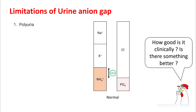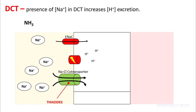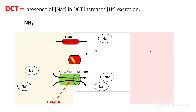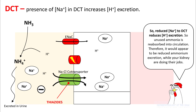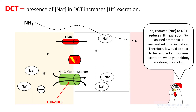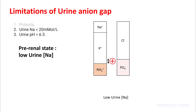There are a few limitations of the urine anion gap. First, polyuria — if you produce a lot of diluted urine, your urine anion gap will falsely appear higher, suggesting a renal etiology when it is not. Another concept: the presence of sodium in the distal convoluted tubule increases hydrogen excretion. As you absorb sodium in the DCT, you generate negative intraluminal charges, allowing hydrogen ions to be excreted and combine with ammonia to form ammonium, which is then excreted. If there is not enough sodium in the DCT, hydrogen excretion is reduced, so it appears that ammonia production is reduced even though the kidneys are working normally — the ammonia is simply reabsorbed into the bloodstream. This is commonly seen in the prerenal state where you have low urine sodium, giving a falsely positive urine anion gap.